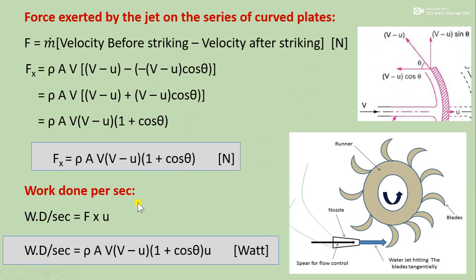Work done per second, meaning power, is the product of force and plate velocity. Putting in the expression for force, work done per second equals rho·A·V·(V minus U)·(1 plus cos theta)·u, and power is in Watts.